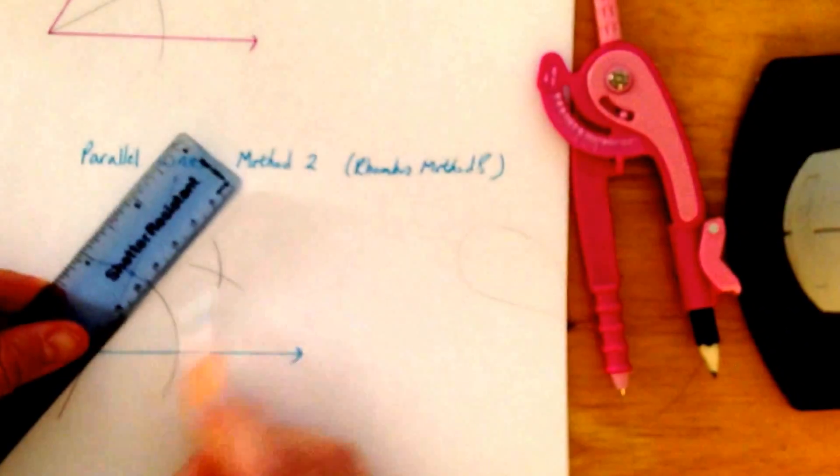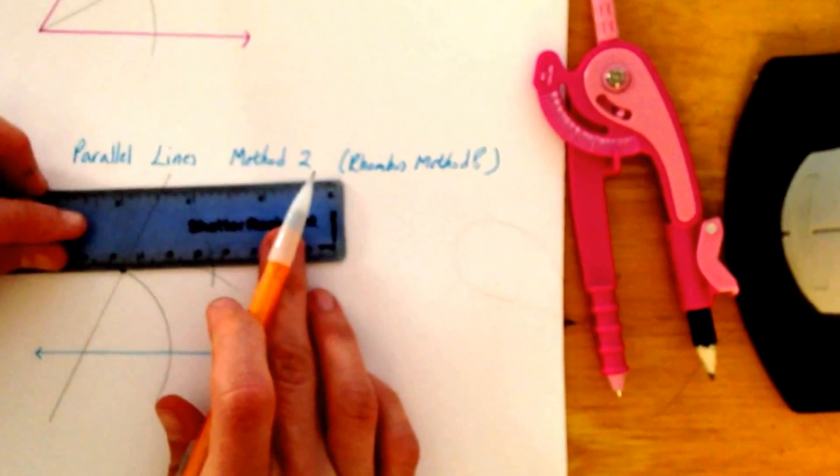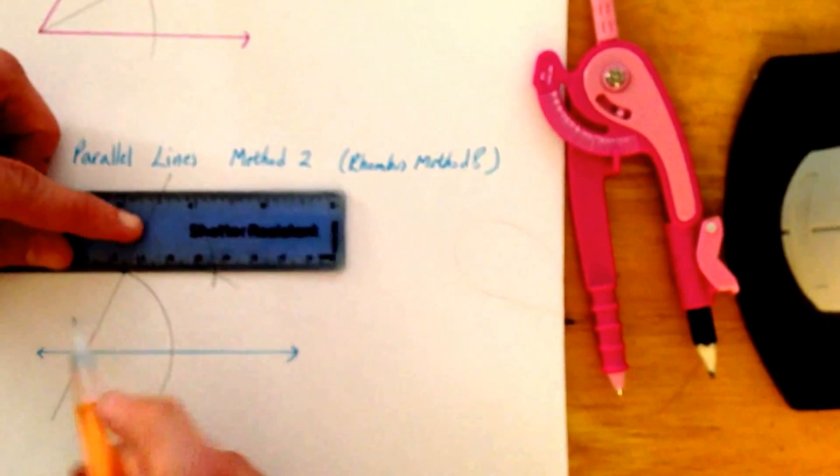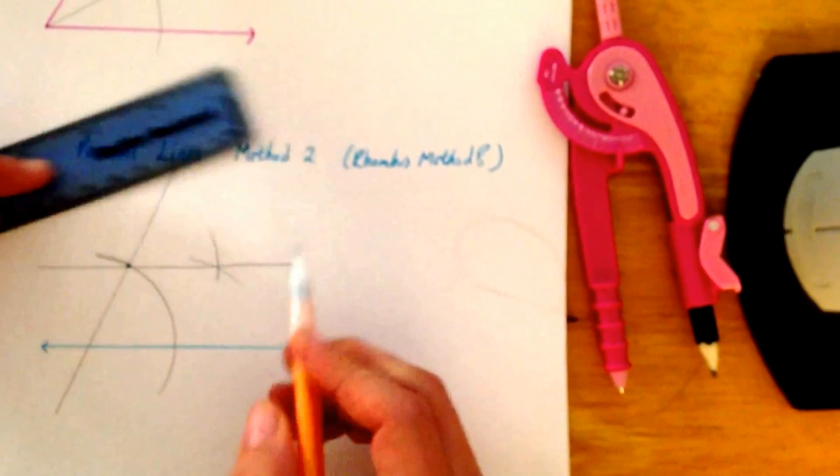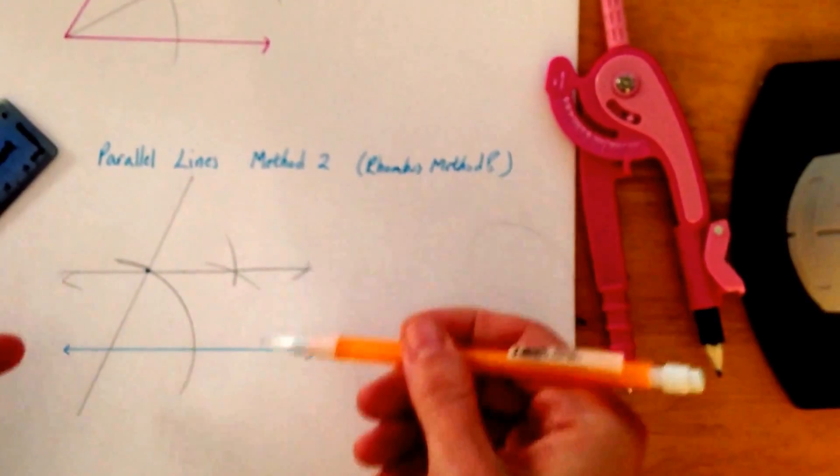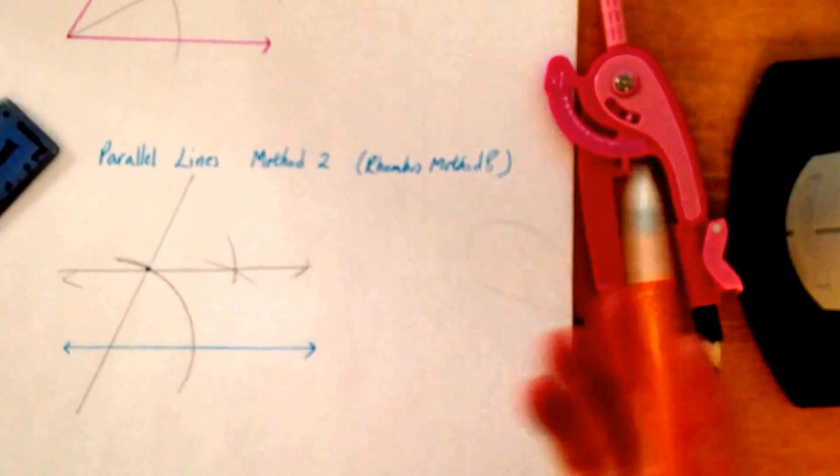instead of connecting this point and that point to bisect the angle, connect that point and that point to make a parallel line. So, you've now created parallel lines through that point. Awesome.